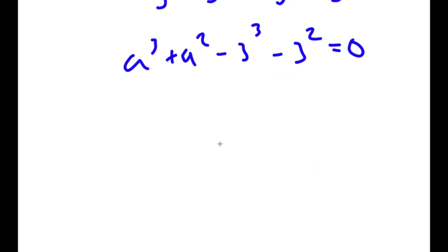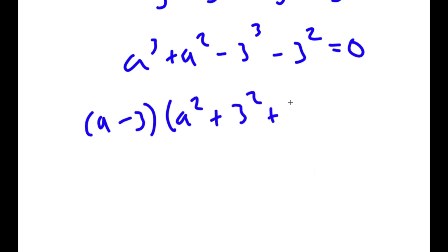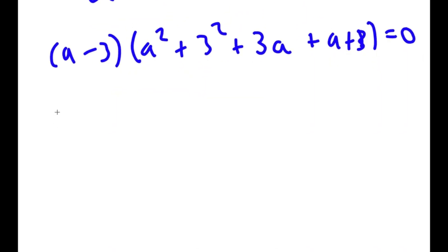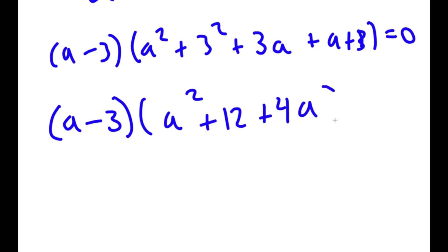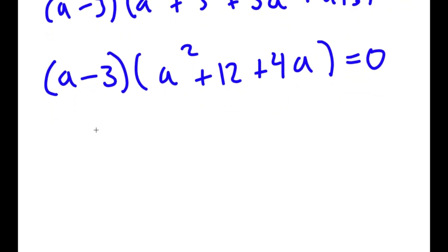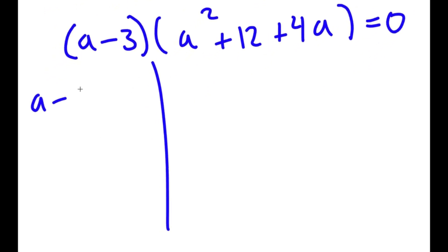Now I can rewrite this in the form (a minus 3) times (a squared plus 3 squared plus 3a) plus (a plus 3) is equal to 0. This simplifies to (a minus 3) times (a squared plus 4a plus 12) is equal to 0. So now this gives me two equations: a minus 3 equals 0, and a squared plus 4a plus 12 equals 0.